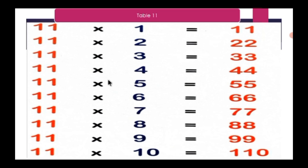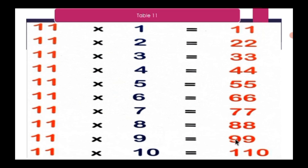Once again: 11 ones are 11, 11 twos are 22, 11 threes are 33, 11 fours are 44, 11 fives are 55, 11 sixes are 66, 11 sevens are 77, 11 eights are 88, 11 nines are 99, 11 tens are 110.